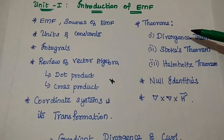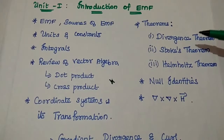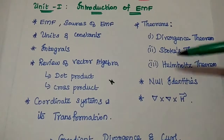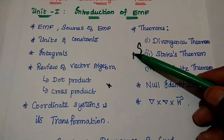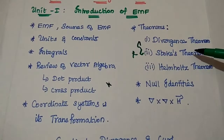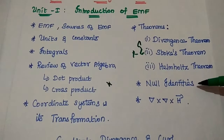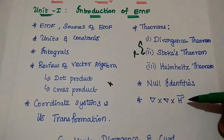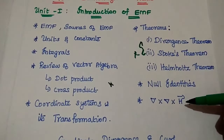In the second half of Unit 1, we have different theorems and their proofs: Divergence theorem, Stokes' theorem, and Helmholtz theorem. These two theorems are very important and we can expect questions from them. Also, the null identities and their proofs — the very important identity is del cross del cross H vector.